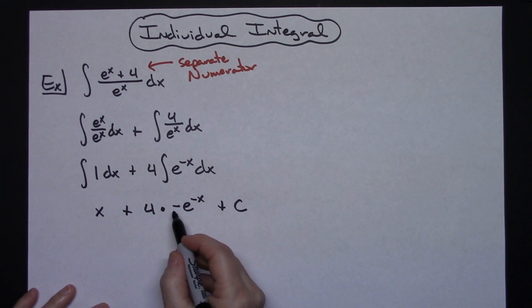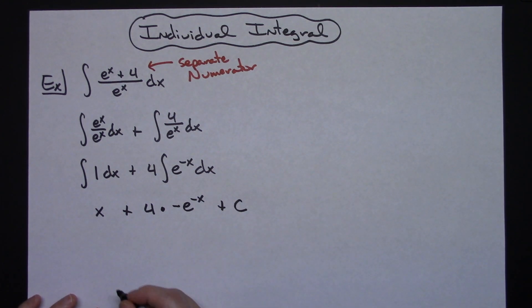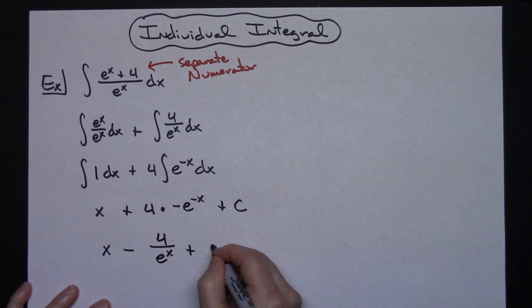Clean that answer up just a little bit. Pull the negative out here in front. Make this go down to the bottom so we've got a positive exponent there. It's going to give us an x minus 4 over e to the x plus c.